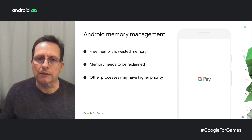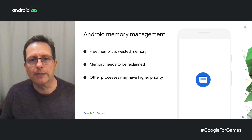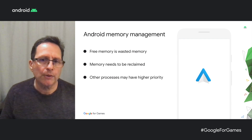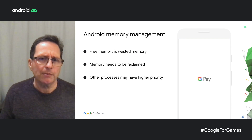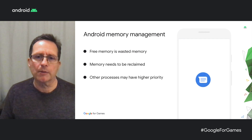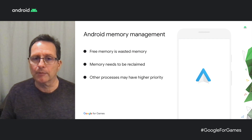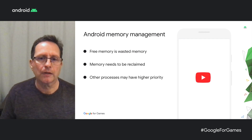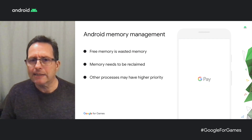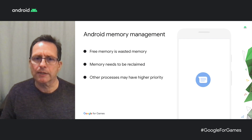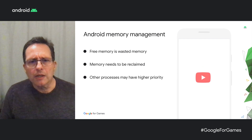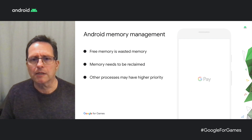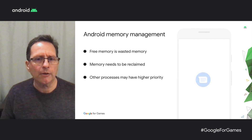Let's take a quick look at how Android manages memory. Android uses memory for caching background apps, so keeping large amounts of memory free is just wasting memory. If your game needs memory, it may need to wait for Android to kill background apps. Keep in mind that other processes may have a higher priority in memory than your game.